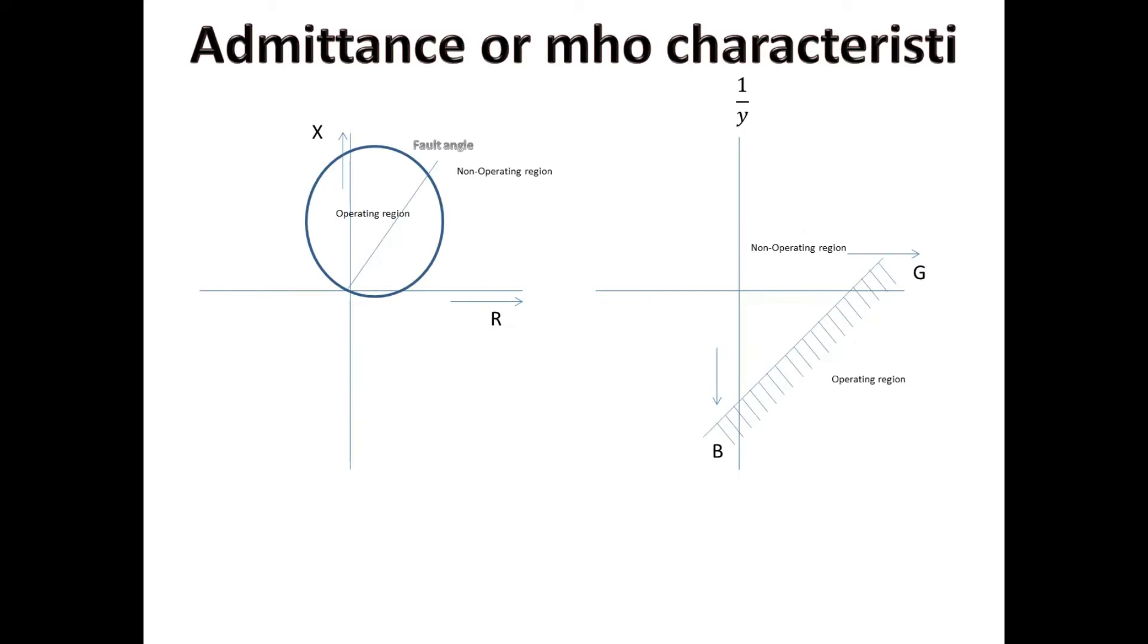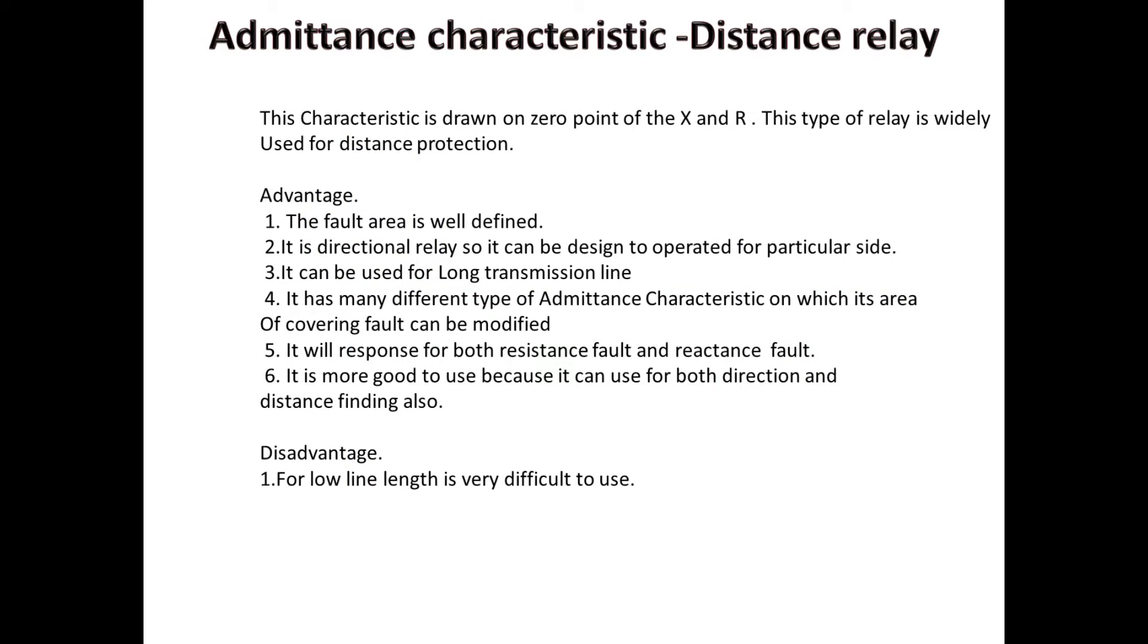Next, we can see about admittance characteristics. If we see these characteristics, it is drawn above the zero point of X and R axis, i.e. reactance and resistance. This type of relay is widely used for distance protection. And also, this type of relay is more flexible by using numerical relay.